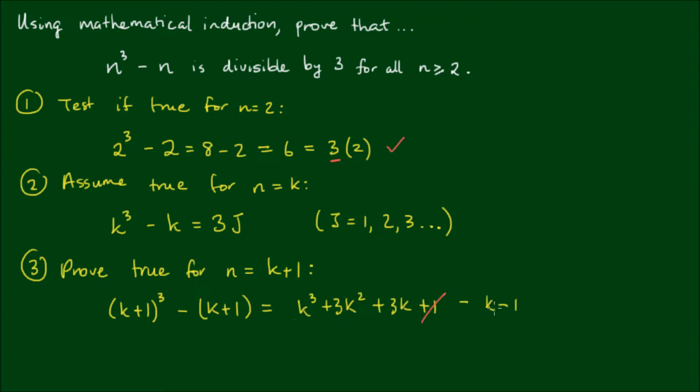Okay, so positive 1 and negative 1 cancel, and for convenience, I shall rewrite this equation as k cubed minus k plus 3k squared plus 3k. Now this k cubed minus k term, we can substitute for 3j.